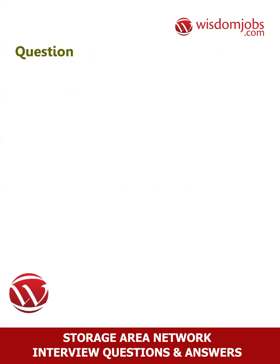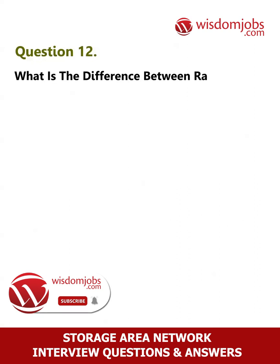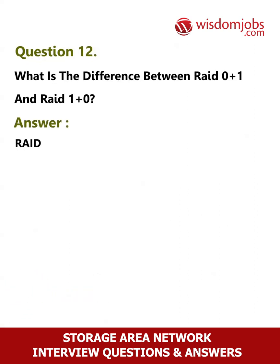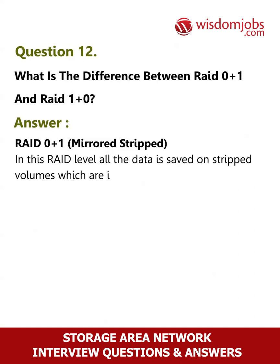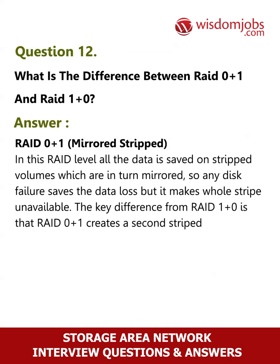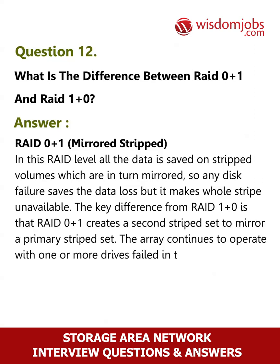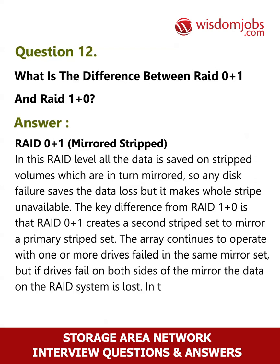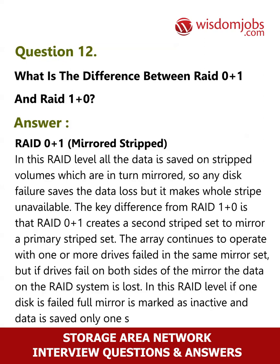Question 12: What is the difference between RAID 0+1 and RAID 1+0? RAID 0+1 (mirrored striped): all data is saved on striped volumes which are in turn mirrored, so any disk failure saves data loss, but it makes the whole stripe unavailable. The key difference from RAID 1+0 is that RAID 0+1 creates a second striped set to mirror a primary striped set. The array continues to operate with one or more drives failed in the same mirror set, but if drives fail on both sides of the mirror, the data is lost. If one disk fails, the full mirror is marked as inactive and data is saved on only one striped volume.